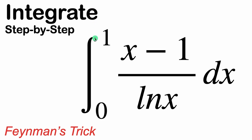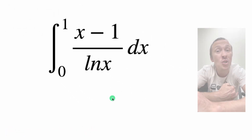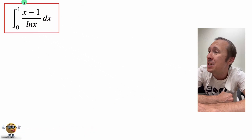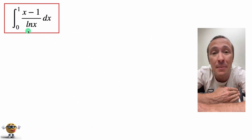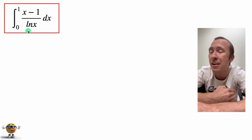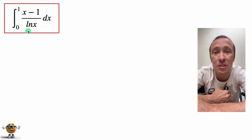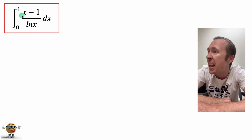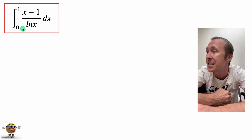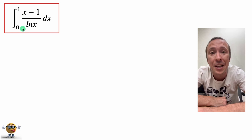What's up gang, we're going to evaluate the integral of x minus 1 divided by ln x from 0 to 1, and it's going to be sweet because we're going to use the Feynman method — a trick you can use to solve complicated integrals like this one right here. I'll go through it step by step.